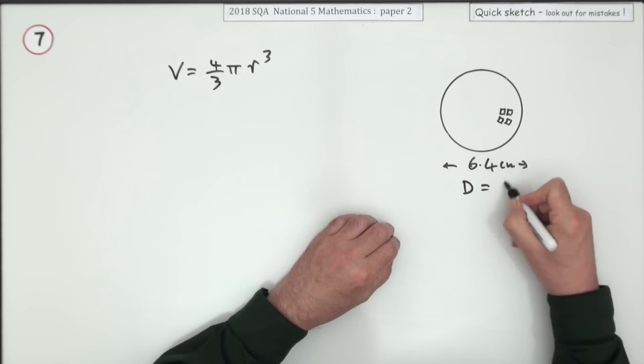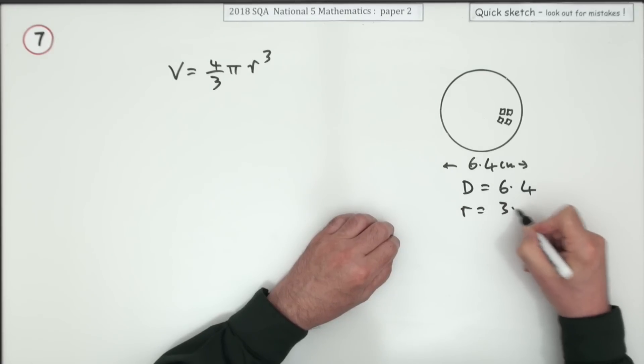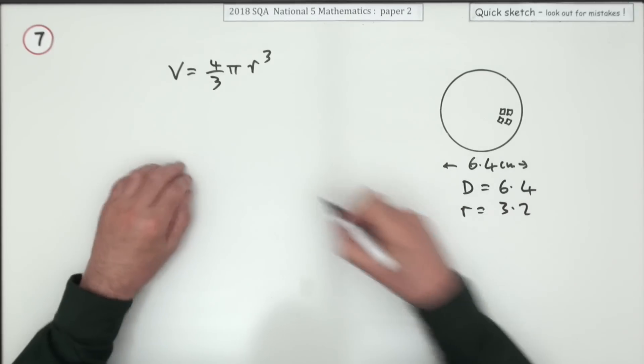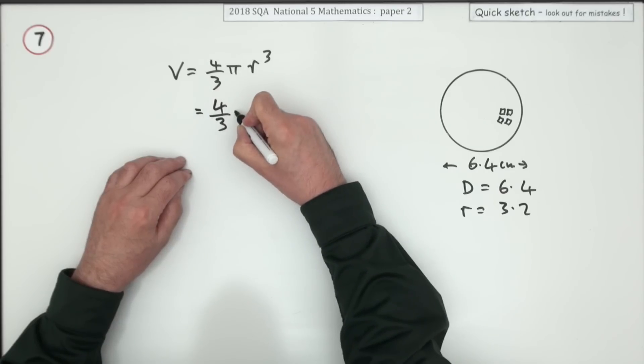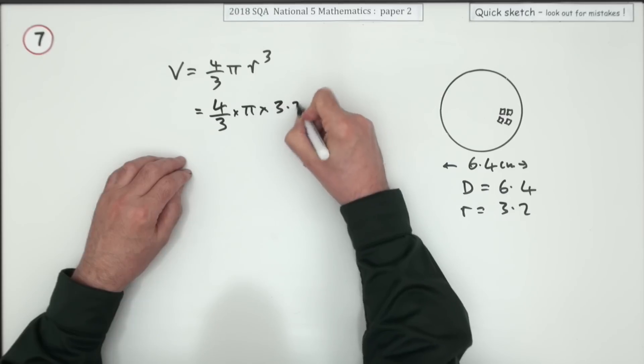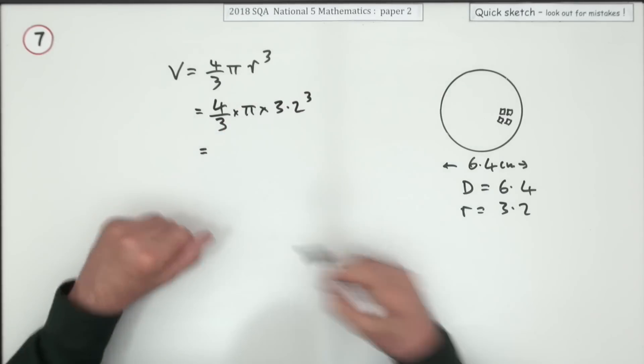Well if the diameter is 6.4 that means the radius is going to be 3.2, so that's what I'll be putting in. But apart from that it's just put in these figures: 4 upon 3 times pi times 3.2 cubed and then use your calculator.